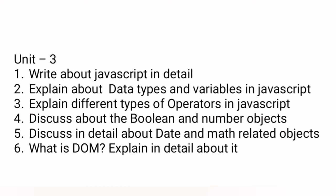Question number three: explain different types of operators in JavaScript. Write about arithmetic, assignment, relational, logical, and bitwise operators with examples. Also discuss boolean and number objects — boolean objects are used for finding true or false values, and number objects are used to store numeric values.